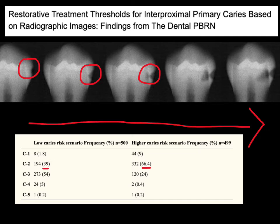If you wait and have a pulp exposure while excavating, it feels to the patient like you did something wrong versus giving them a heads-up. It's always a good idea to say this decay is super deep, we'll go nice and slow, and do whatever we can to keep you from needing a root canal. But if this bacterial process reaches the pulp, the pulp will be inflamed and you'll need a root canal or extraction.